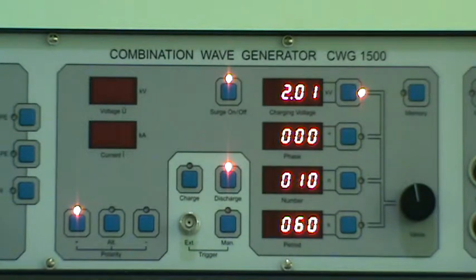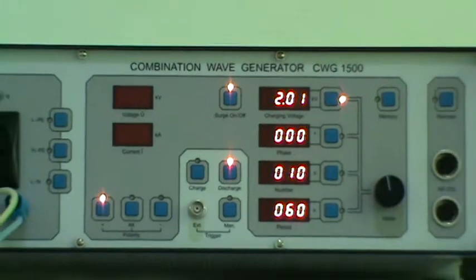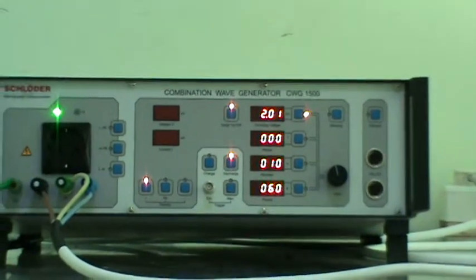Surge test is done to know the limitation of the products against AC lighting surges and undesired surges induced in the equipment. Now we shall explain the connections, operation and capabilities of the CWG1500.